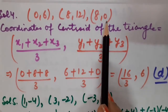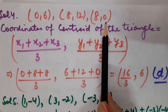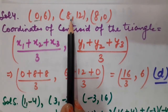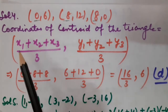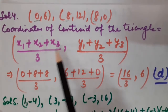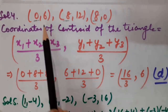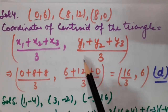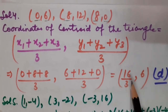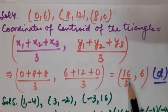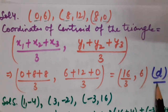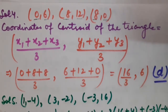Here are the coordinates of the vertices. This is x₁, this is x₂, this is x₃. Add all of them and divide by 3, and similarly y₁+y₂+y₃ divided by 3. After simplifying, I have got (16/3, 6). The right option is option number D.